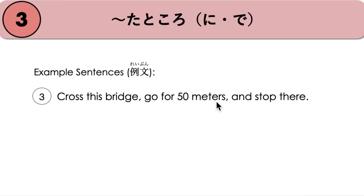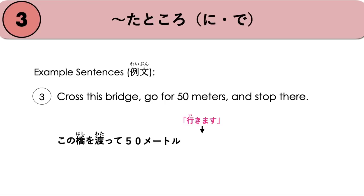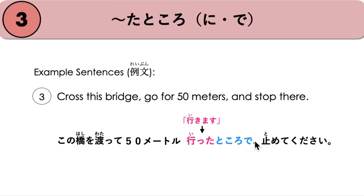Next example: 'Cross the bridge, go for 50 meters, and stop there.' 'There' refers to the destination after going 50 meters. Iku (to go) becomes itta tokoro. We use particle de because the action is to stop — tomete kudasai. So: kono hashi wo watatte, gojuu meetoru itta tokoro de, tomete kudasai.